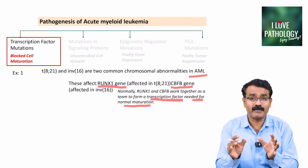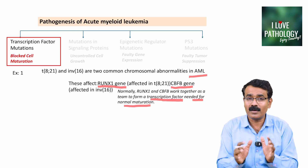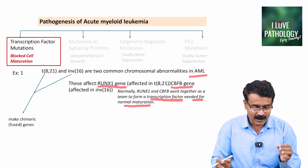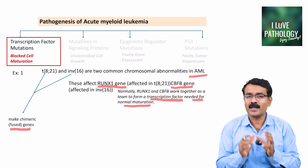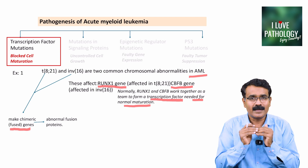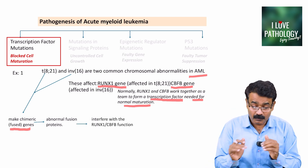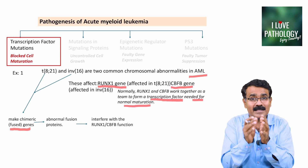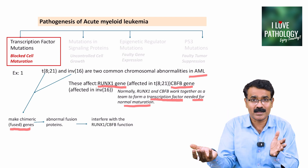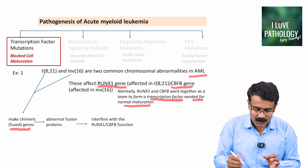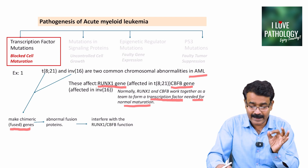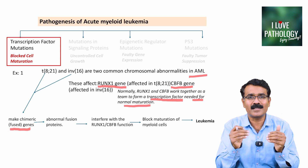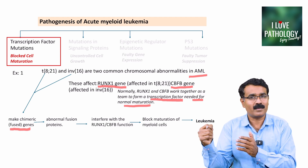When there is mutation involving these genes, it results in the formation of chimeric or fused genes, which produce abnormal fusion proteins that interfere with normal function. That normal function — forming a transcription factor for normal maturation — is interfered with, resulting in blockage in the maturation of myeloid cells, leading to acute myeloid leukemia.